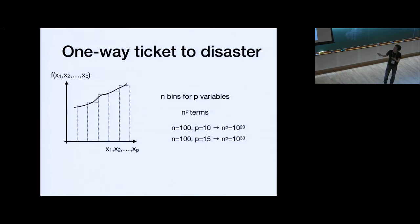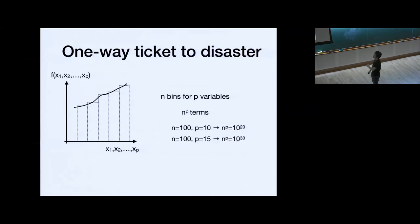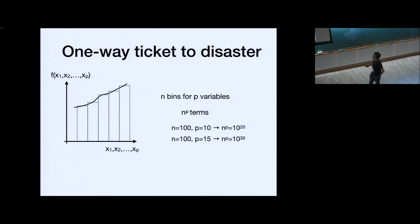Before explaining Markov chain Monte Carlo, we should understand why we need it. Why not use some simpler method? If we have 10 variables and 100 bins for each direction, we would have 10 to the 20 bins, and we have to sum up that many numbers. For 15 variables, we have to sum 10 to the 30 numbers. Using Livermore Lab Sequoia — which was the fastest supercomputer in the world a few years ago — 10 to the 20 operations takes 5,000 seconds, still acceptable. But 10 to the 30 operations takes longer than the history of Homo sapiens.